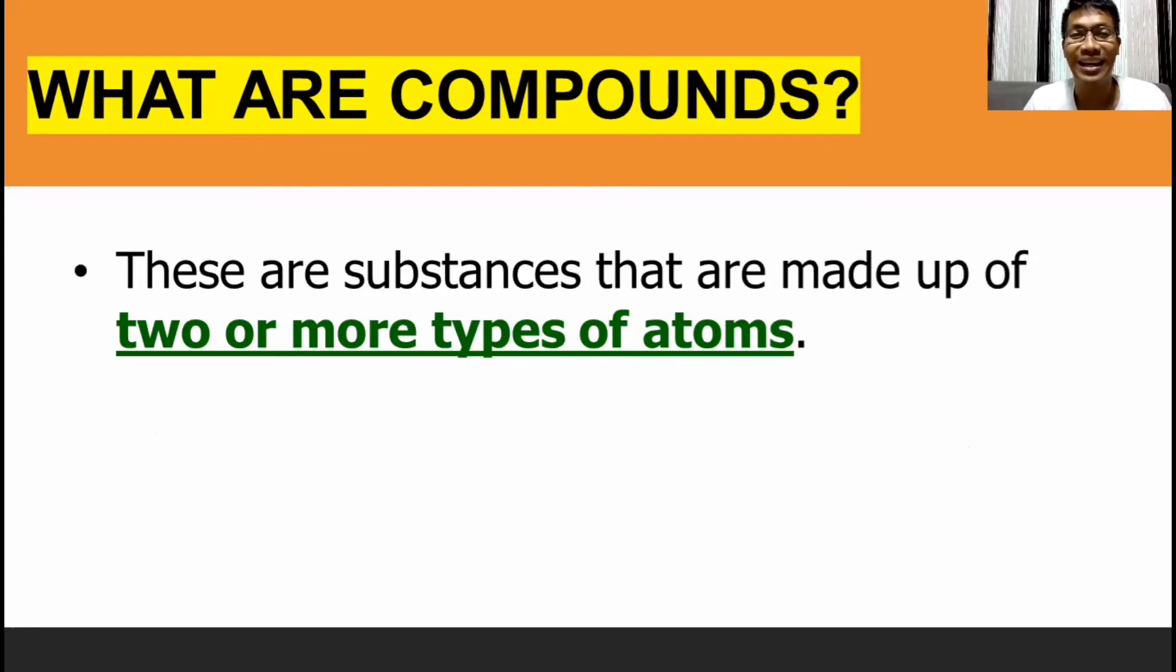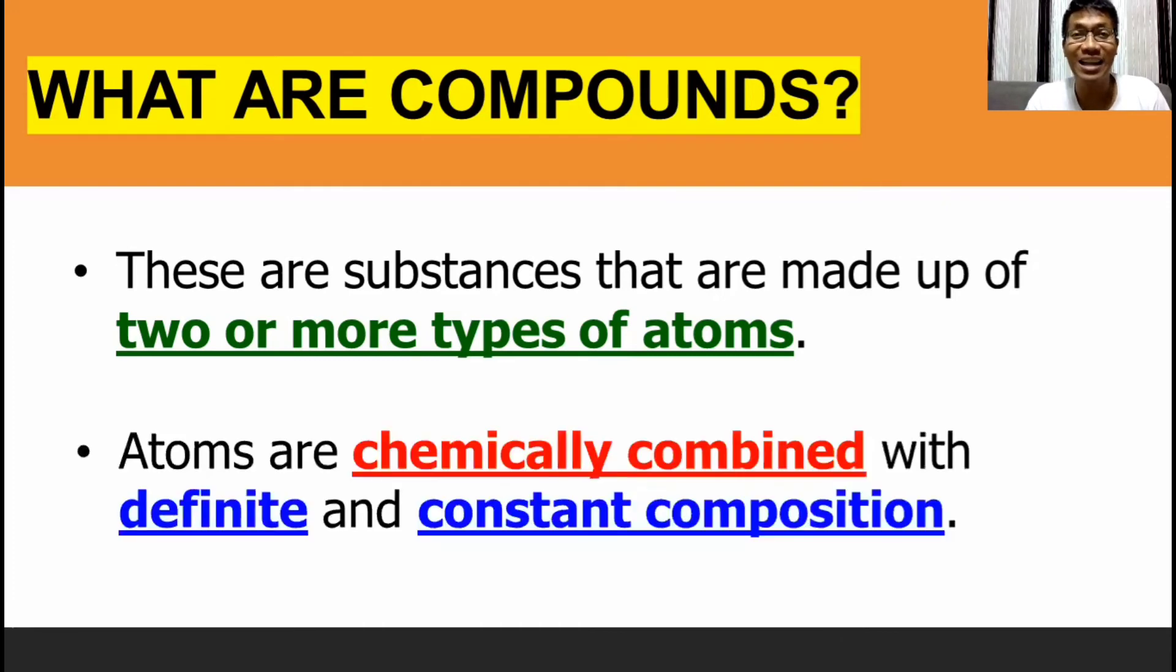Dapat natin tandaan na para makonsider natin ang isang substance as compound, ito ay composed ng dalawa o higit pang elements. Another note that we need to remember about compounds is that their atoms should be chemically combined, and they are having definite and constant composition.